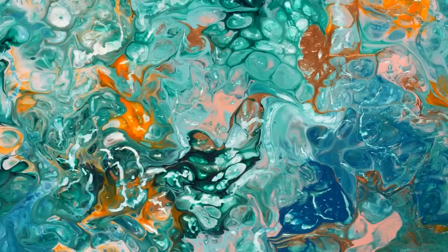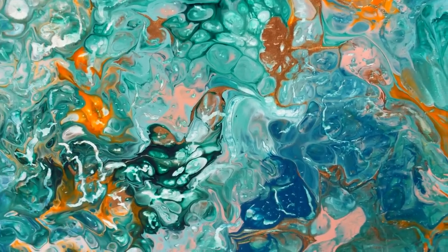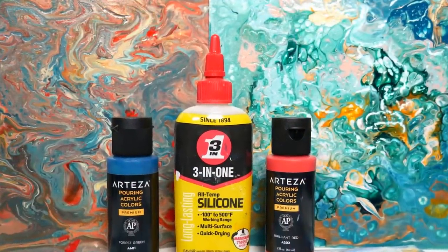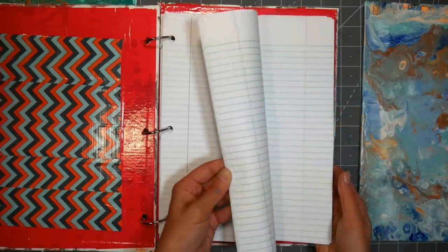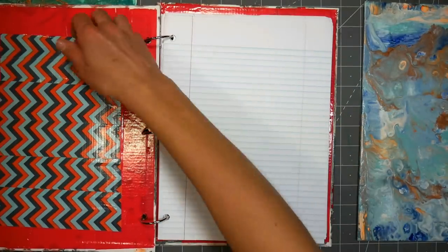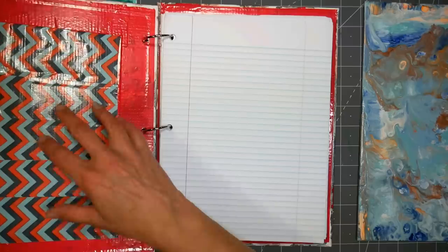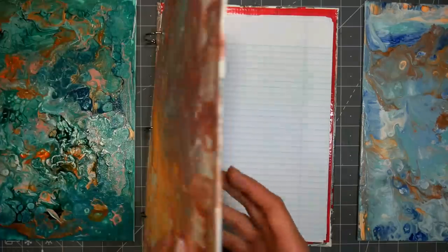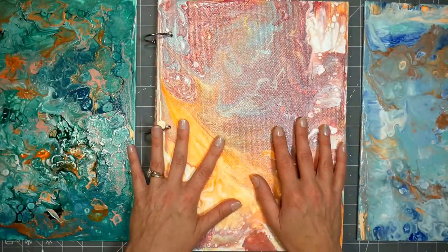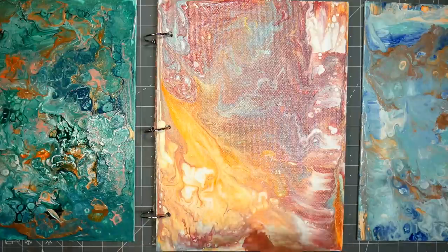Today we are going to do some acrylic paint pouring and then we are going to take our panels and make a fun binder. This can be used with filler paper for back-to-school. You could also put drawing paper or watercolor paper in here and make your own art sketchbook. We've got a couple pockets here that we can put stuff in and it's a nice useful way to use up some of the canvas panels that you may be practicing your acrylic paint pouring techniques with.